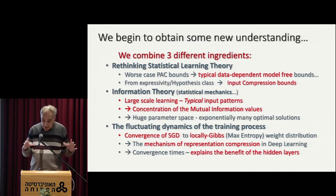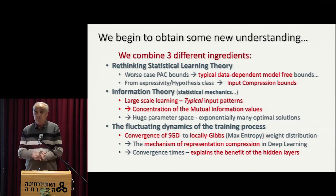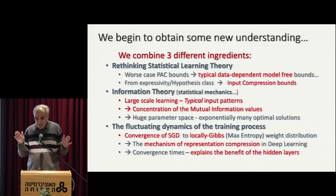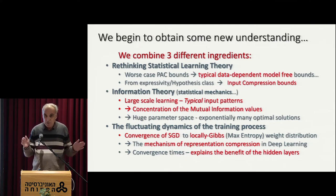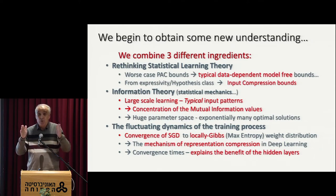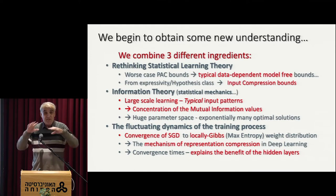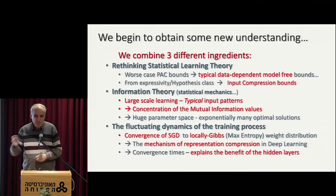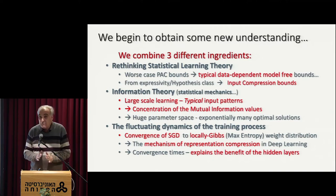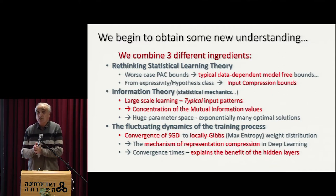The first is really rethinking statistical learning theory, which is: forget about all those worst-case PAC bounds, which essentially supposed to control my generalization in a distribution-independent way for the worst-case type of data. For typical samples, this doesn't seem to give anything useful for such networks.